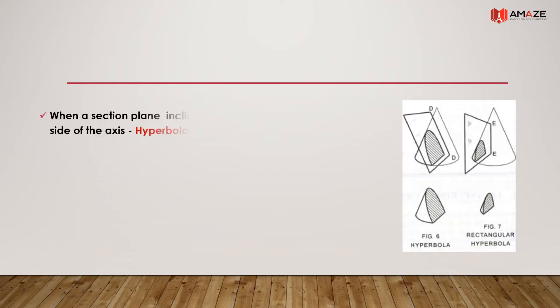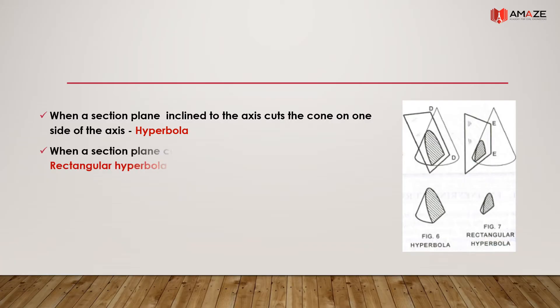When a section plane inclined to the axis cuts the cone on one side of the axis, we get a hyperbola. When a section plane cuts the cone parallel to the axis, we get a rectangular hyperbola.